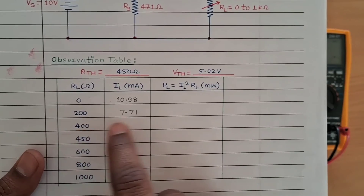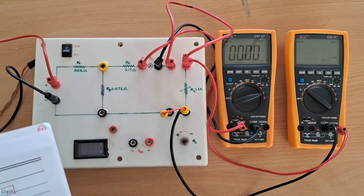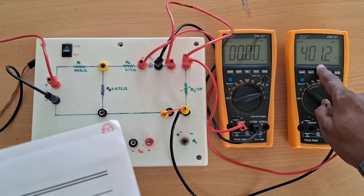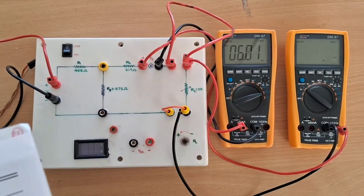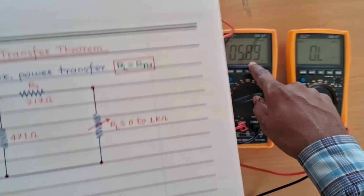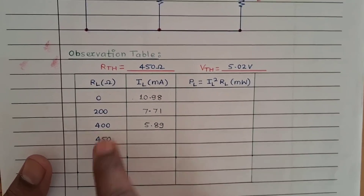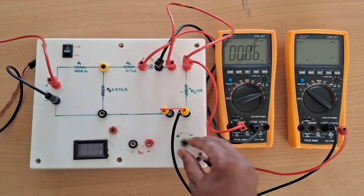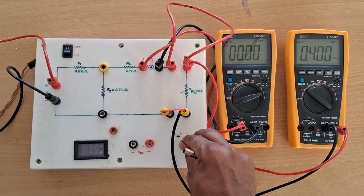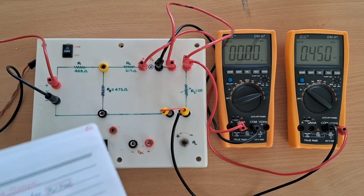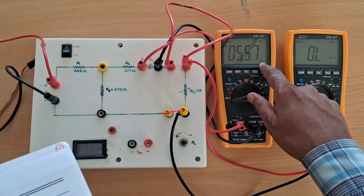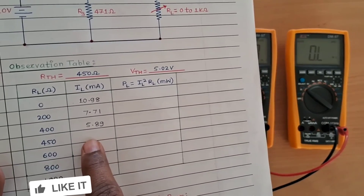For the next reading at 400 ohms, disconnect the resistance first, then increase it to approximately 400 ohms and reconnect. We get approximately 5.89 milliamperes at 400 ohms. The next reading is at 450 ohms, which is our Rth — take this reading carefully. Set the resistance to 450 ohms, reconnect, and we get 5.57 milliamperes.